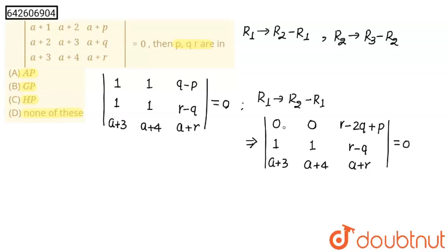Now I am going to expand this. So 0 into anything, this will become 0. This will become 0. Minus times 0 into anything, 0. This into this minus this into this, this will become also 0.